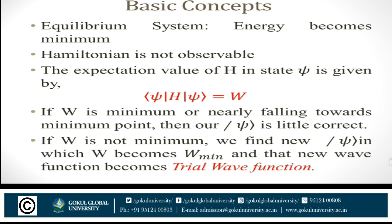First of all, consider an equilibrium system. In an equilibrium system, the energy becomes minimum. The Hamiltonian is an observable. We know that the expectation value of H in state |ψ⟩ is given by ⟨ψ|H|ψ⟩ = W. If W, the expectation value of H, is minimum or nearly falling towards the minimum point, then our |ψ⟩ is approximately correct. If W is not minimum, we find a new wave function in which W becomes W_minimum, and that new function becomes the trial wave function.